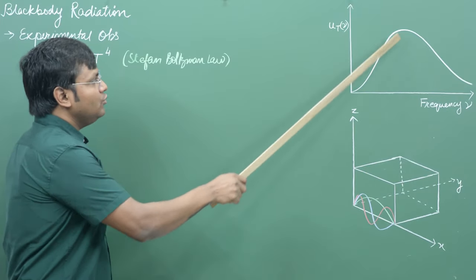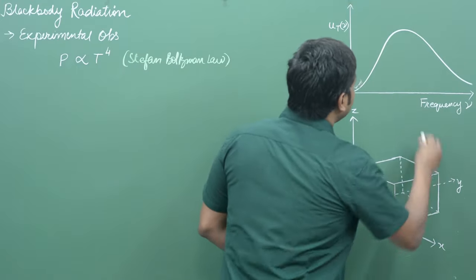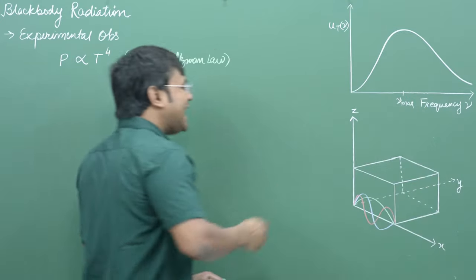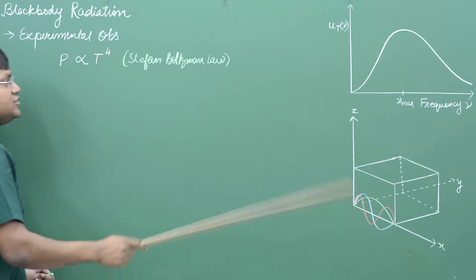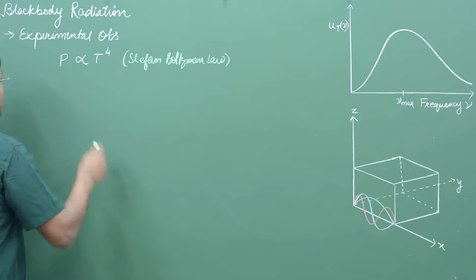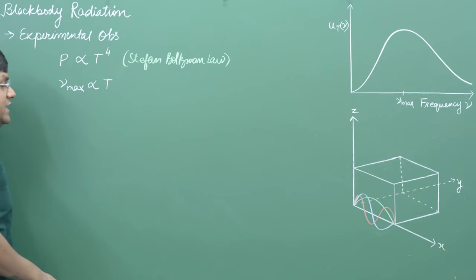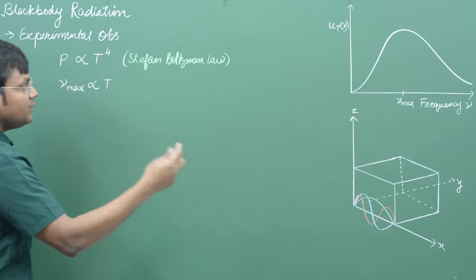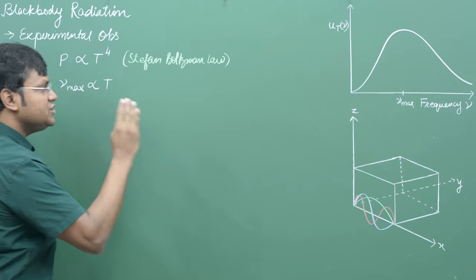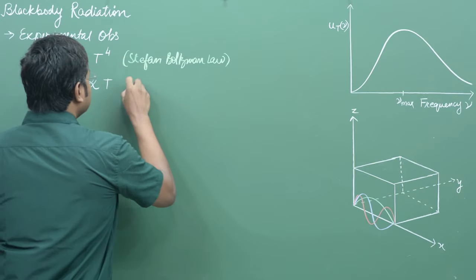Another experimental law: if you look at the frequency ν_max at which the energy density is at its peak or maximum, this ν_max is directly proportional to temperature T. With increasing temperature, the peak of the energy density shifts towards higher frequencies in a linear fashion. This is known as Wien's displacement law.